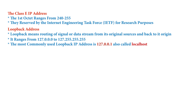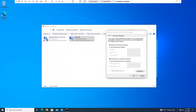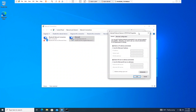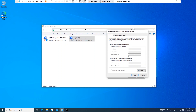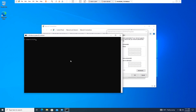Localhost as a hostname is mostly mapped to the address 127.0.0.1. Loopback addresses are logical, meaning they are not assigned to a physical interface or network interface card. For example, on my computer the physical network card has no IP address assigned, but when I ping the loopback address I get a response, indicating that my system's logical TCP/IP stack is working correctly.